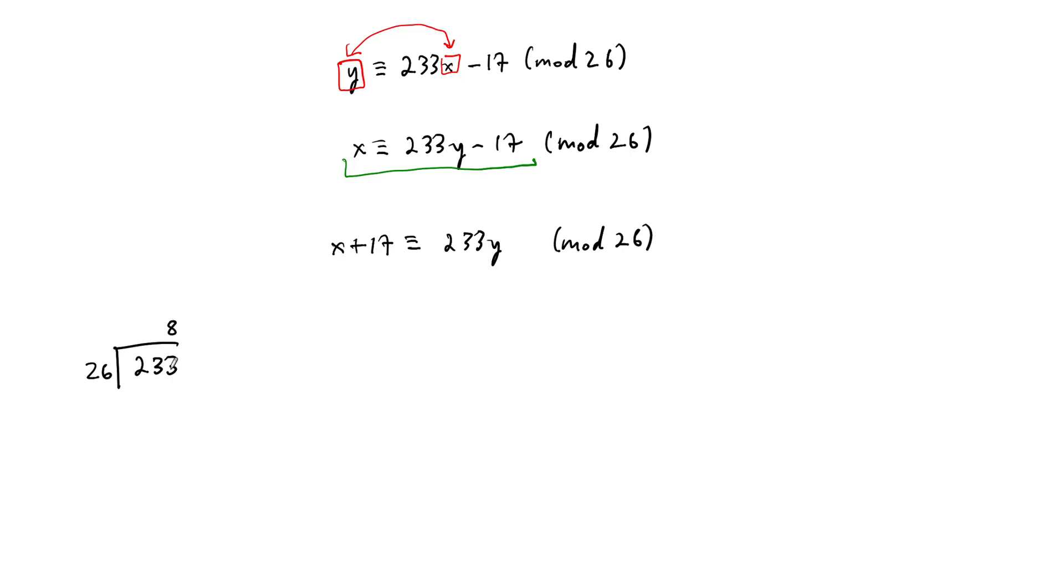So it's going to be 8. So this is going to be 208. We subtract, so that just leaves us with 25. So the remainder is 25, or in this case, it's negative 1. And negative 1 is a nice number to use.